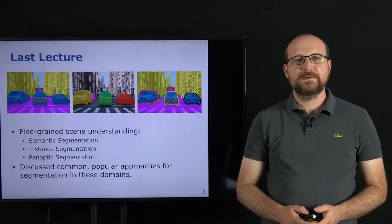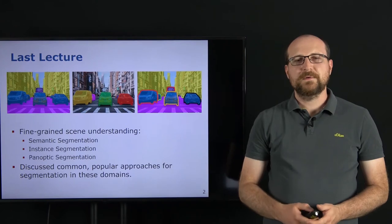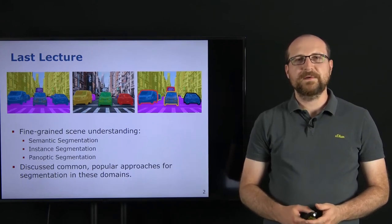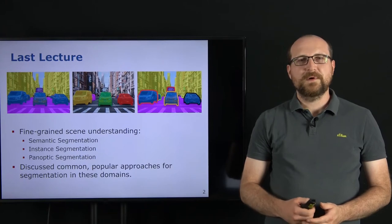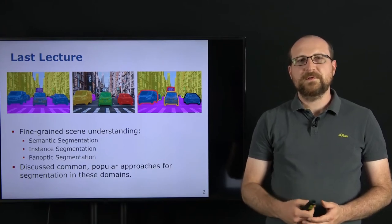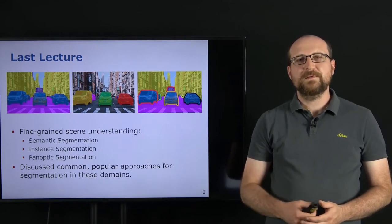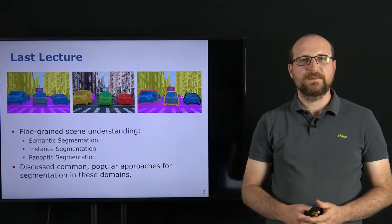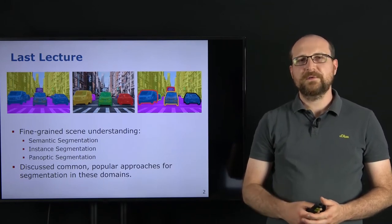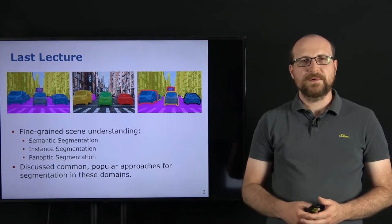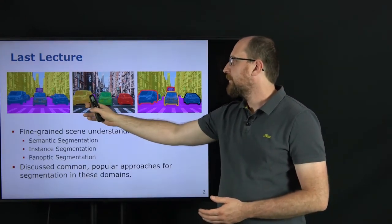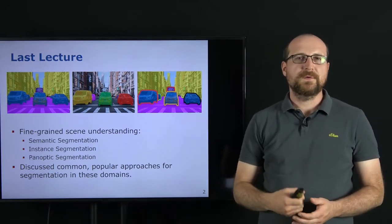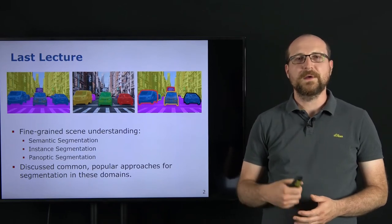In the last lecture we looked at approaches for fine-grained scene understanding. We looked at semantic segmentation, where we are interested in getting a pixel-wise label for each object and surface in the scene. In instance segmentation we are further interested in distinguishing different kinds of object instances — identifying which pixels correspond to different objects, like different cars.